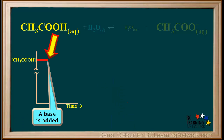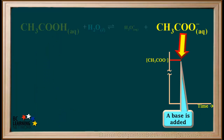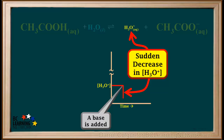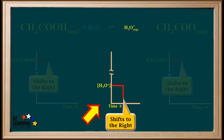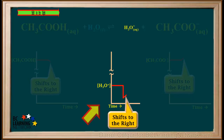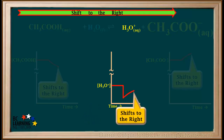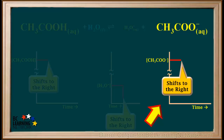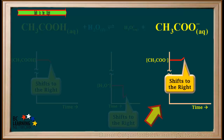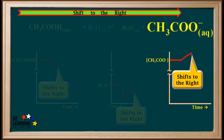Adding a base had no immediate effect on the concentration of acetic acid or on the concentration of the acetate ion. But the sudden decrease in the hydronium ion concentration causes a stress on the equilibrium system. Because hydronium is a product whose concentration has been decreased, the equilibrium will shift to the right in order to compensate. As the shift to the right occurs, the concentration of hydronium gradually increases as it partially compensates for the sudden drop. The acetate ion is also a product, so as the shift to the right occurs, its concentration will gradually increase like the hydronium ion's concentration did.